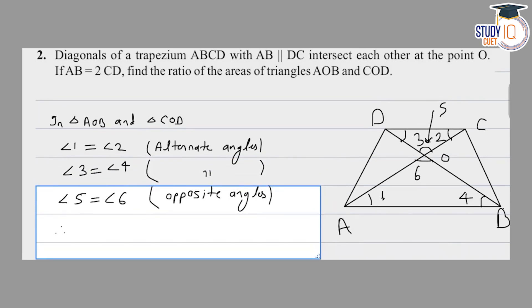So the opposite angles are equal. Therefore, triangle AOB is similar to triangle COD by AAA similarity.